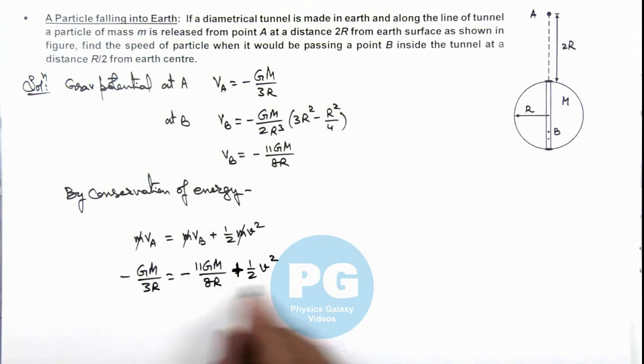And on simplifying this we are getting the value of v is equal to, we take this 11GM by 8R on the other side. The value of speed we are getting is, I am just leaving the calculation part for you. This will be root of 25GM by 12R.